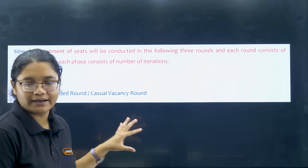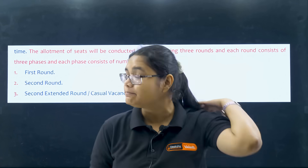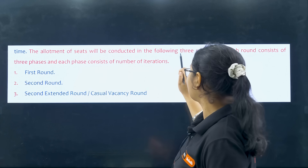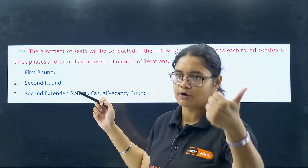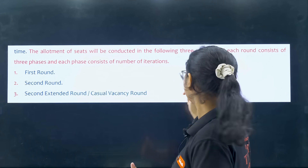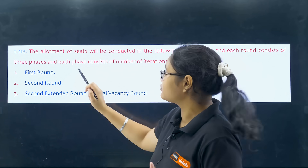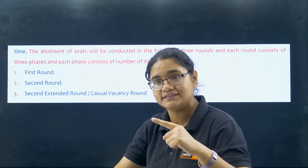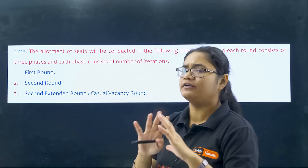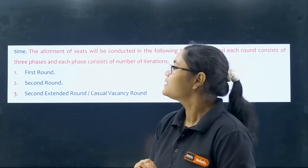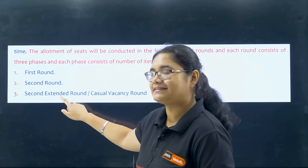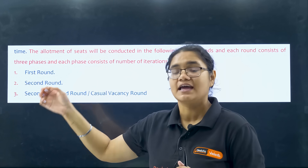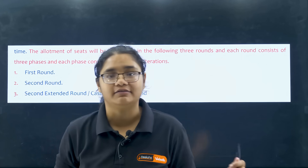This information is taken from the 2024 information bulletin. The allotment of seats is conducted in three rounds — first round, second round, and extended round. Each round consists of three phases, and each phase consists of a number of iterations.